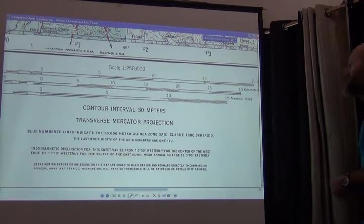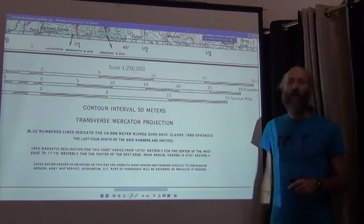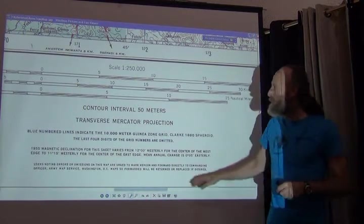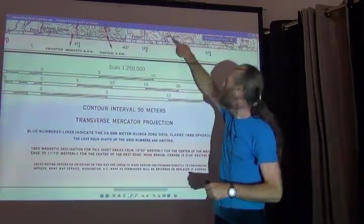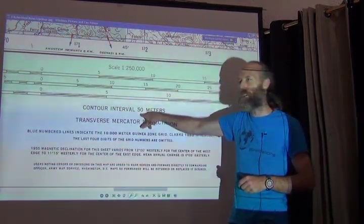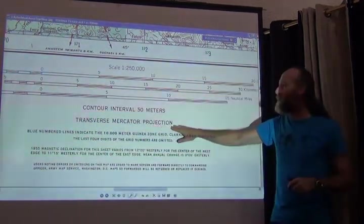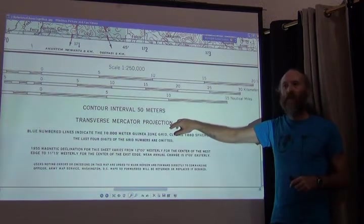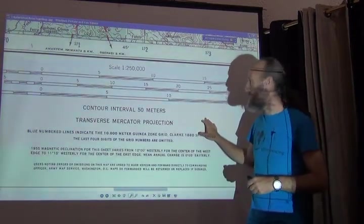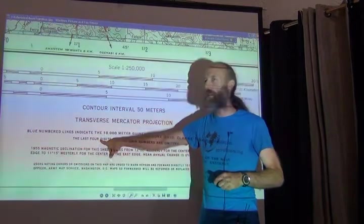I've zoomed into the center at the bottom of this map — the part that no one ever reads — to find the most important information of all. So it's telling me this is a topographic map, and every one of these lines signifies something to do with elevation. This tells me how far apart those lines are: they're 50 meters apart. It tells me that the whole map is in a transverse Mercator projection, so we immediately know something about how it's portrayed.